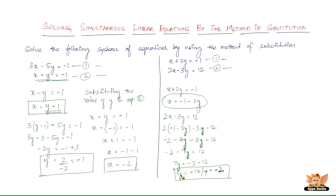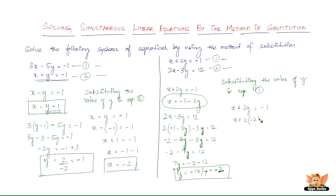Now substitute the value of y into equation 1. Writing equation 1: x plus 2y equals minus 1. Substituting y equals minus 2: x plus 2 times (minus 2) equals minus 1, so x minus 4 equals minus 1, therefore x equals minus 1 plus 4, which gives x equals 3. So x equals 3 and y equals minus 2.